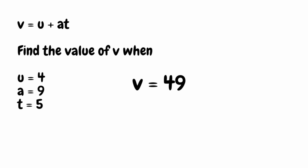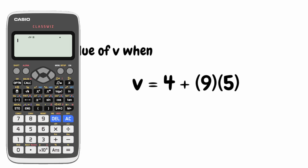Going back to the earlier stage — if we had a calculator, we could type this in just as we see it: 4 plus, then in brackets 9, then in another bracket 5. When we hit equals, we get our answer of 49. This just shows how useful those brackets are.